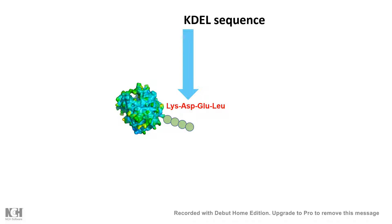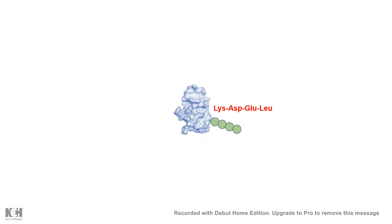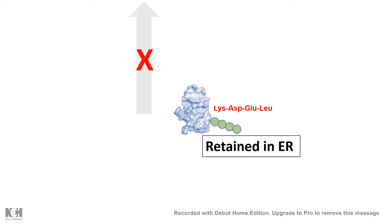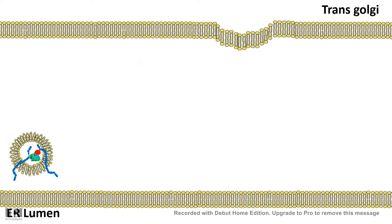Scientists have designed experiments where they genetically added the KDEL sequence onto a protein which is generally secreted out. They found that this protein is then retained in the ER and not secreted, demonstrating that the KDEL sequence alone is sufficient for ER retention.